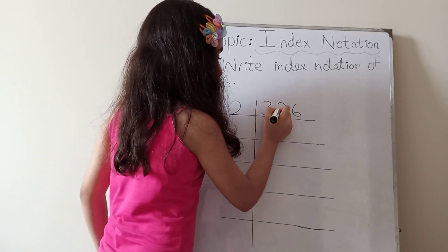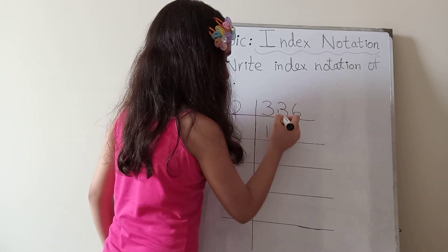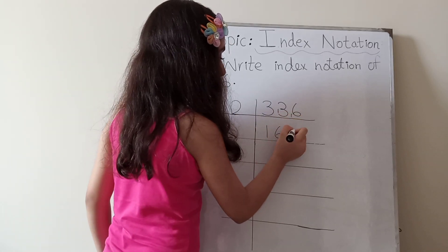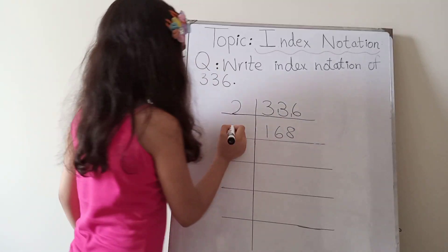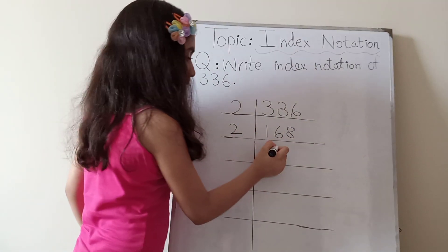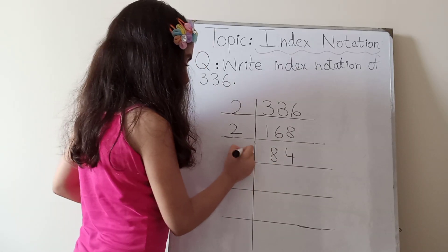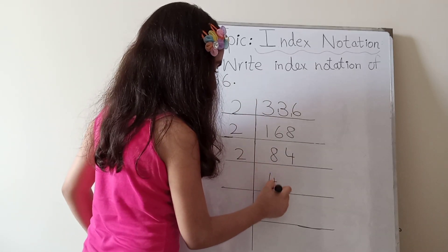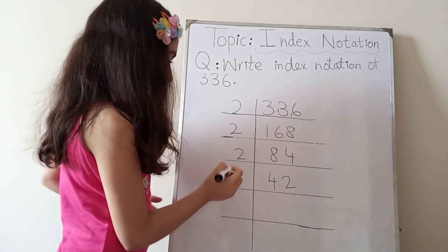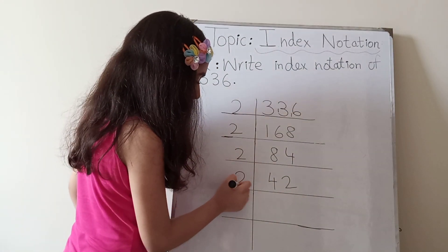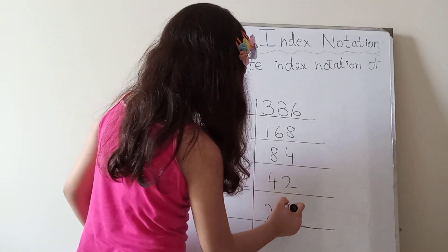Two sixes are twelve, then one is carry. Two eights are sixteen, two eights are sixteen, two fours are eight, two fours are eight. Two twos — again two is an even number so it is divisible by two. Two twos are four, two ones are two.